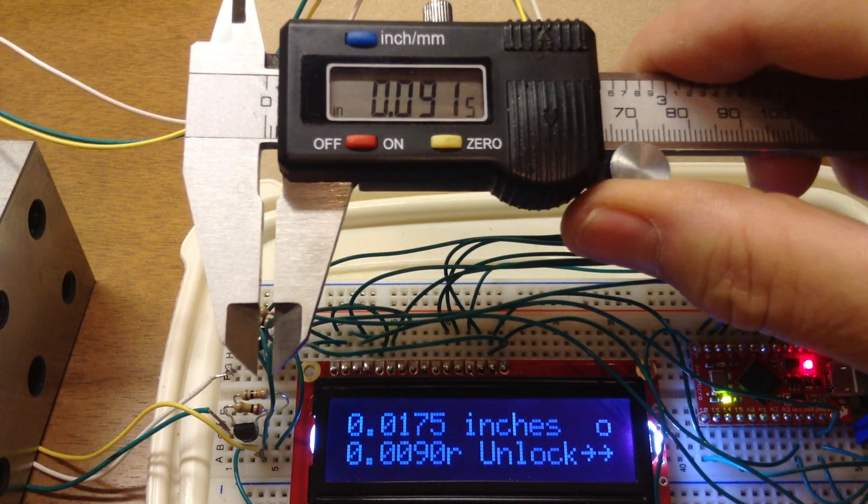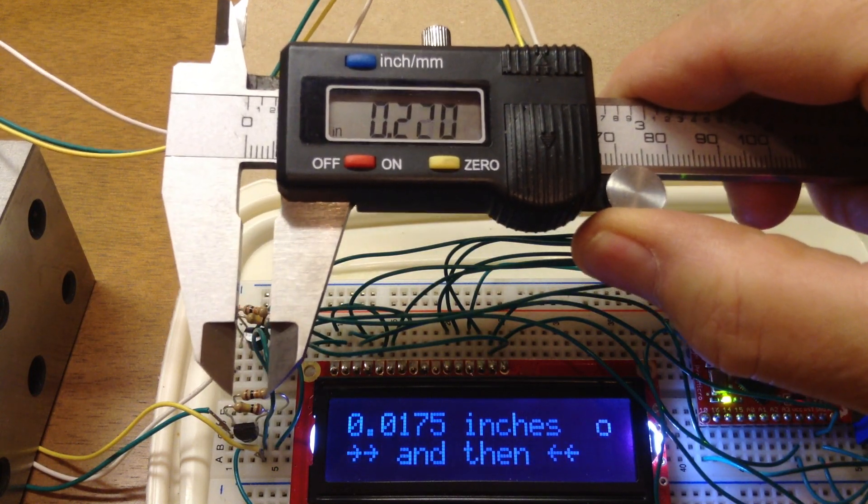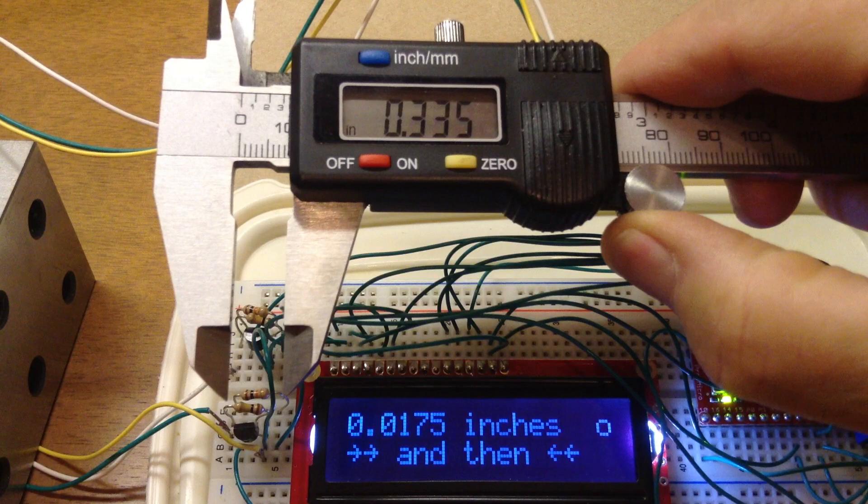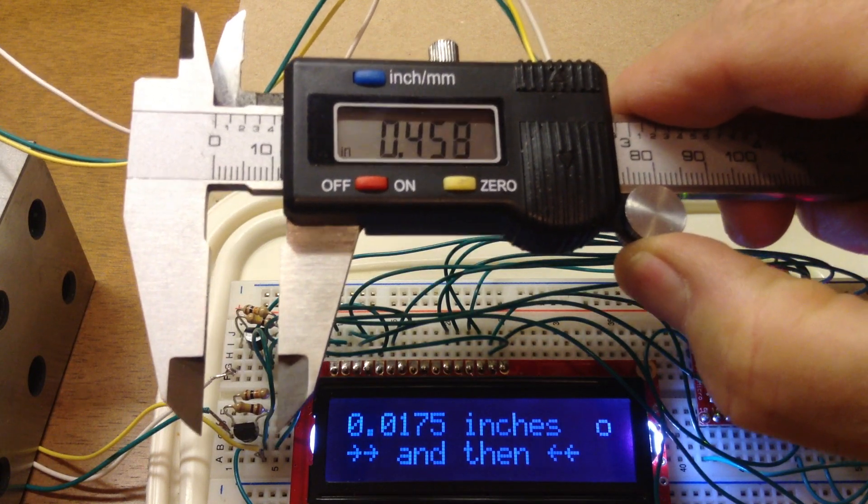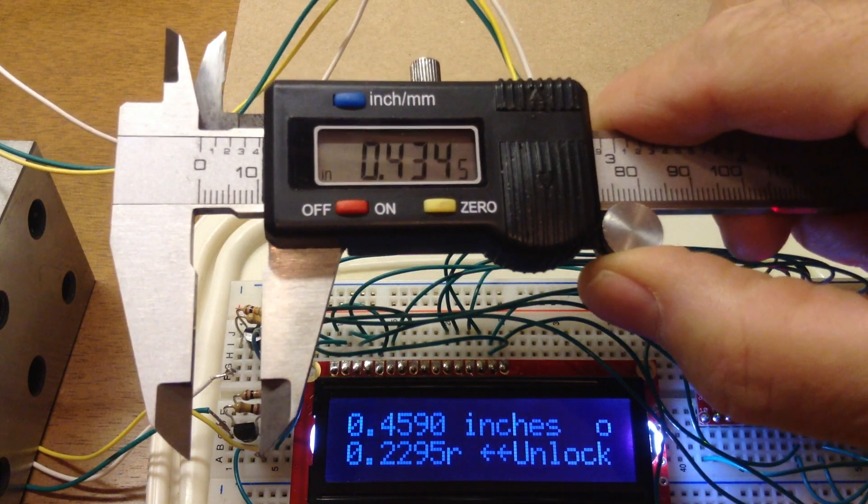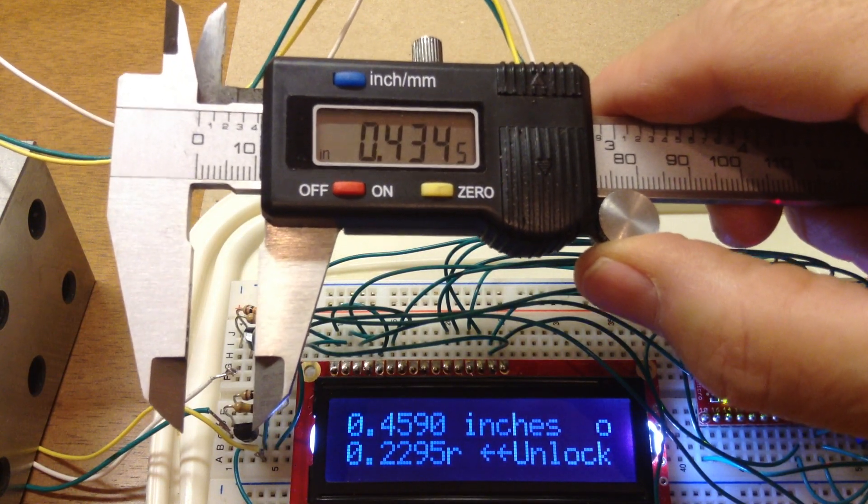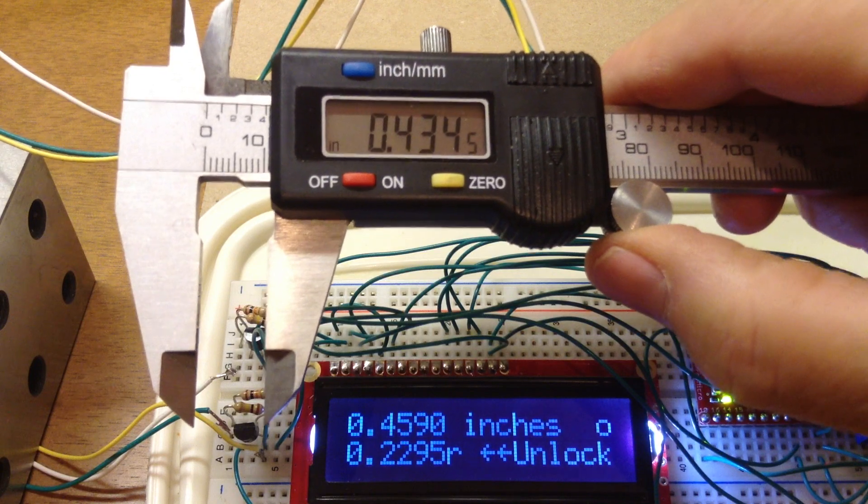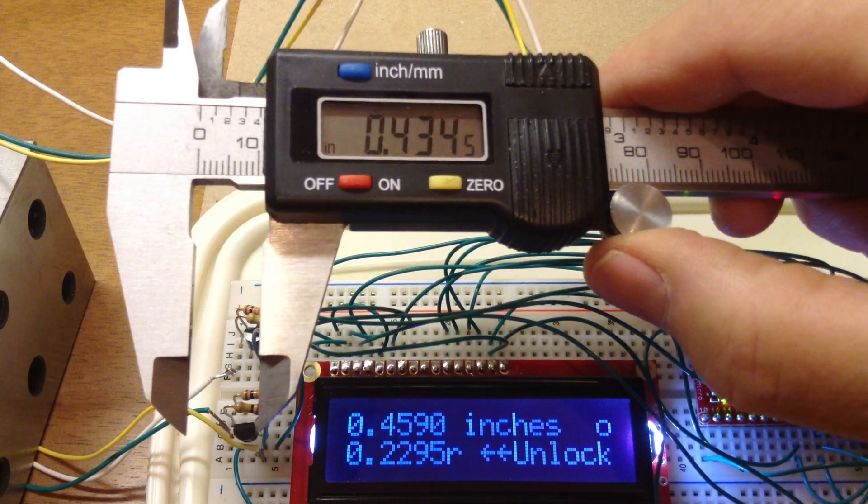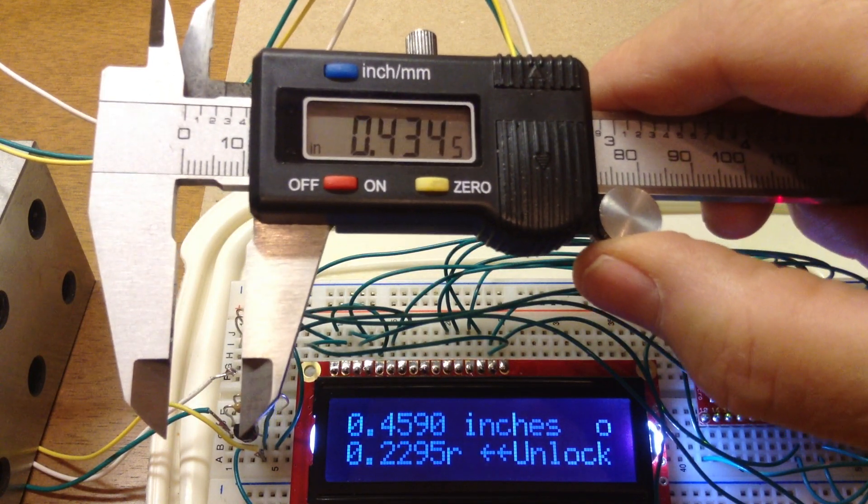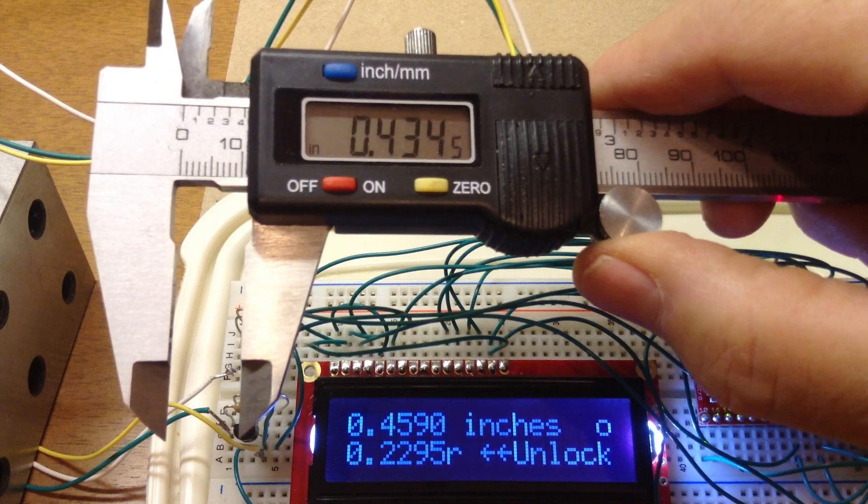So I'm going to open the jaws now, and it's switched to looking for a local maximum. This would be used for an inside diameter. When I change direction and go back, it locks in that local maximum. You can see that the local maximum was 0.4590. The caliper right now is reading less than that, and the reading is locked.